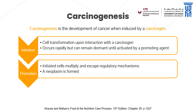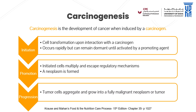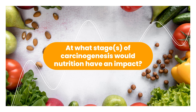The next step is promotion — the initiated cells multiply and escape the regulatory mechanisms of cell division, and then a neoplasm is formed. A neoplasm is a new and abnormal tissue with no useful function; it becomes vascularized and progresses to cancer. Tumor cells aggregate and grow into a fully malignant neoplasm or tumor with vascularization, continuing to grow until detected. At what stage of carcinogenesis would nutrition have an impact? Please pause the video, think about it, and join me again to find the answer.